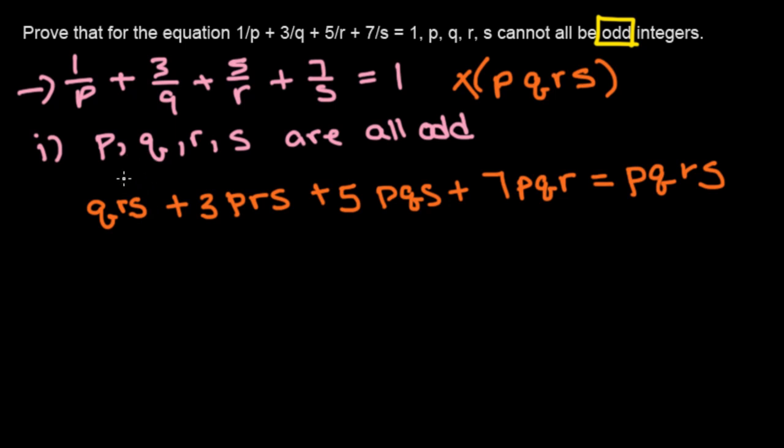Because when we assume that p, q, r, s are all odd, then the right side here, when you multiply odd numbers by odd numbers, it's always odd. So pqrs here is going to be odd, and we know that this is going to be odd.